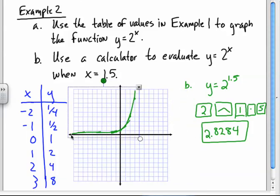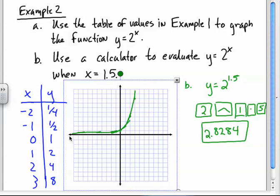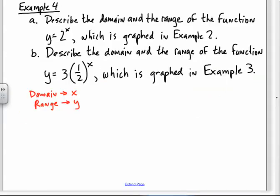What can x be from here to here? I can plug in any x I want. There's not an x that I can't plug in, right? So the domain, the x's, are all real numbers. I can plug in any number for x in y equals 2 to the x.